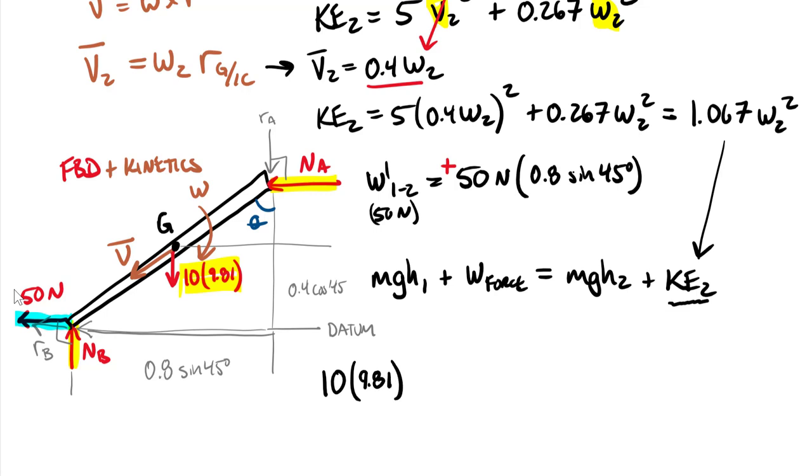Bringing down the work of our 50 newton force, we have 50 newtons times 0.8 meters times sine of 45 degrees. This equals MGH2. We'll bring the right hand side of this equation down to the next line. MGH2 is again 10 as the mass, gravitational constant 9.81, or more officially the gravitational acceleration constant here on Earth. The distance final is 0.4 times cosine of 45 degrees.